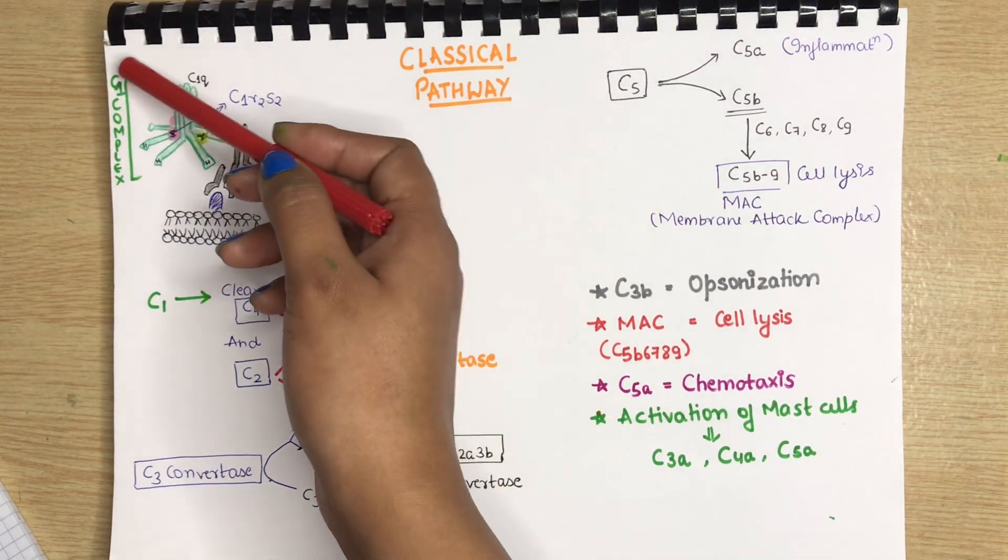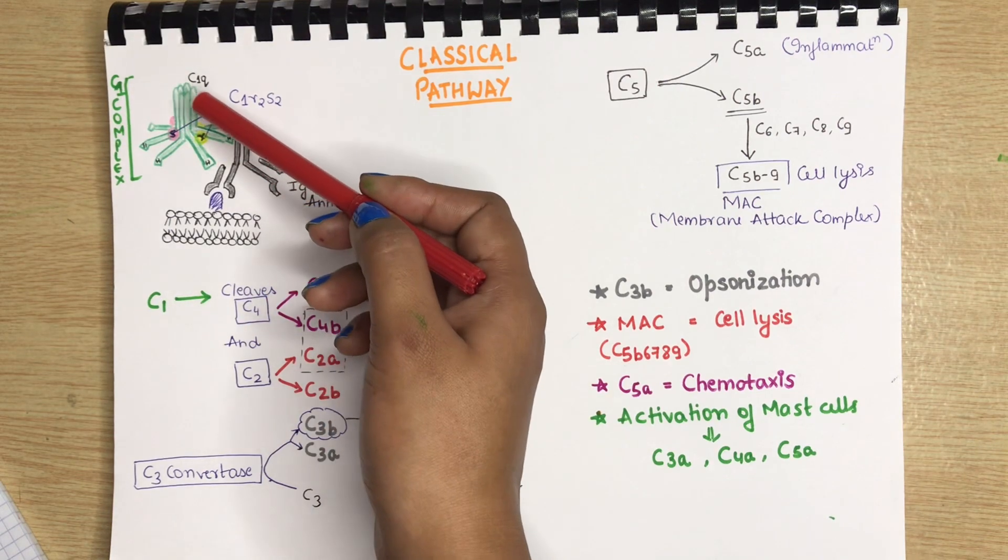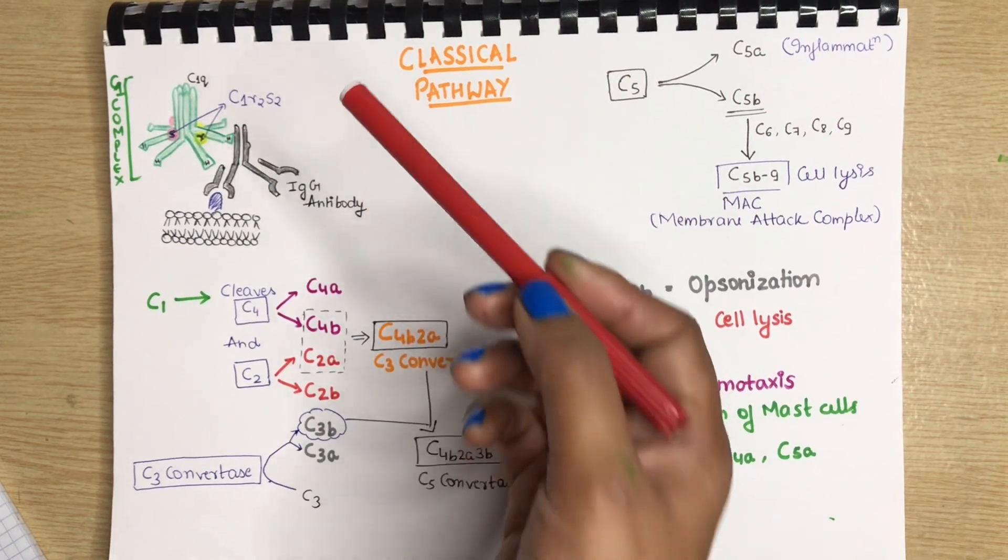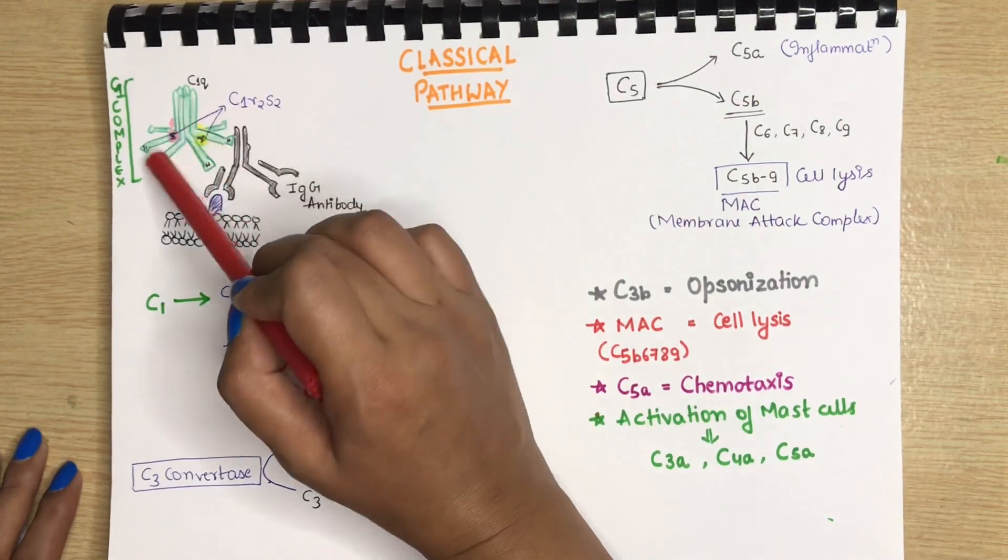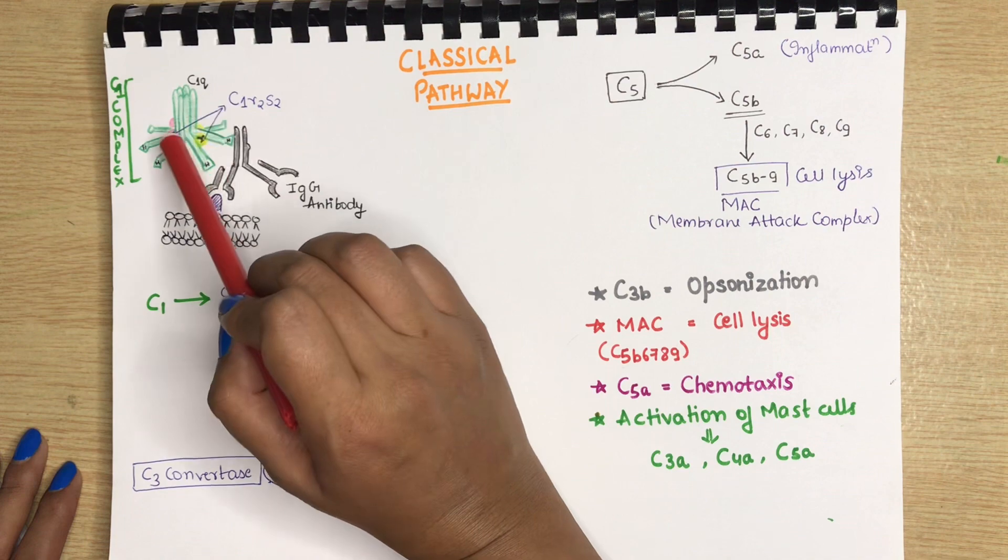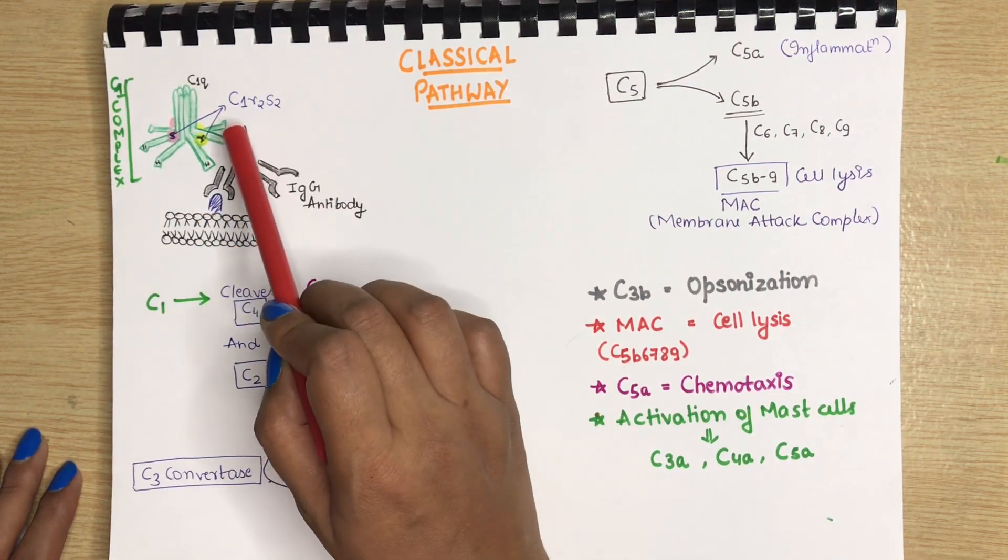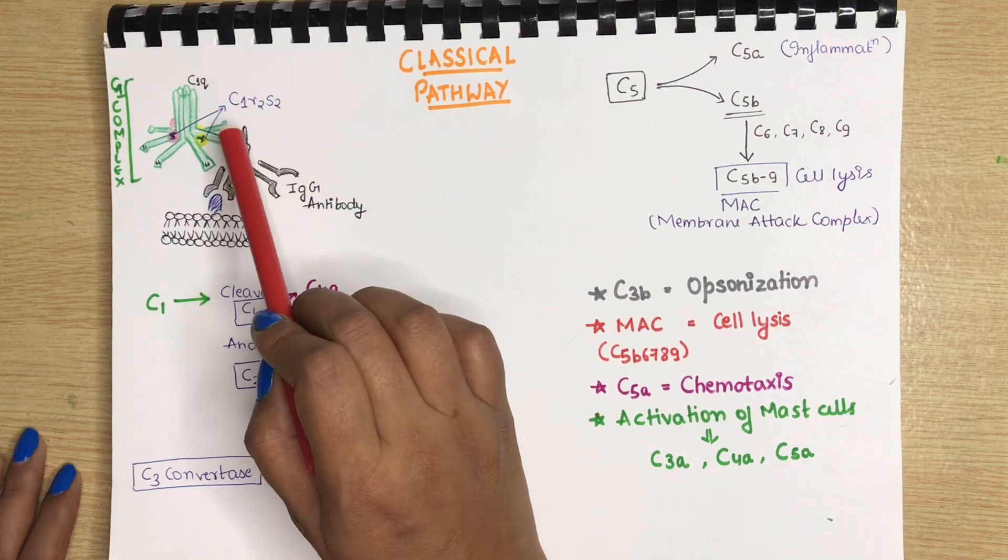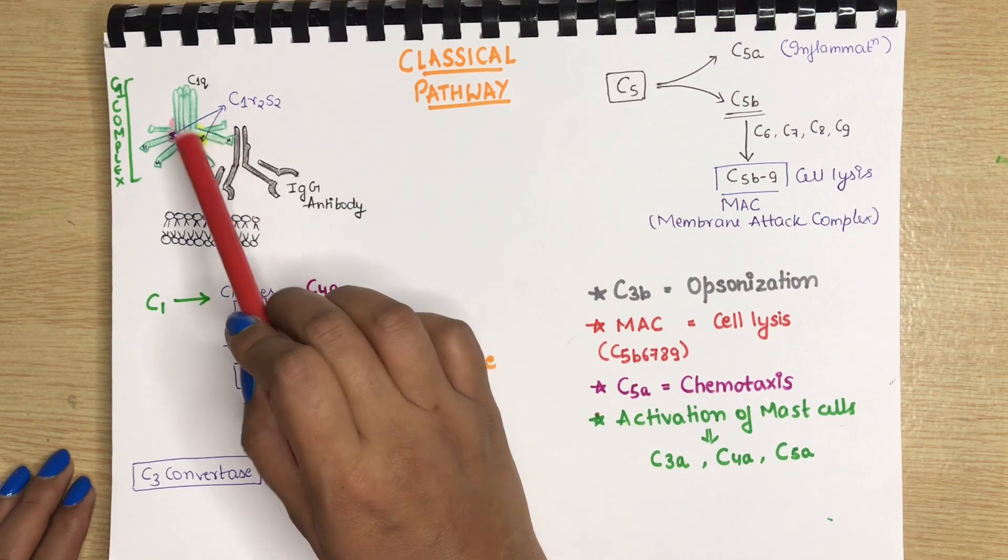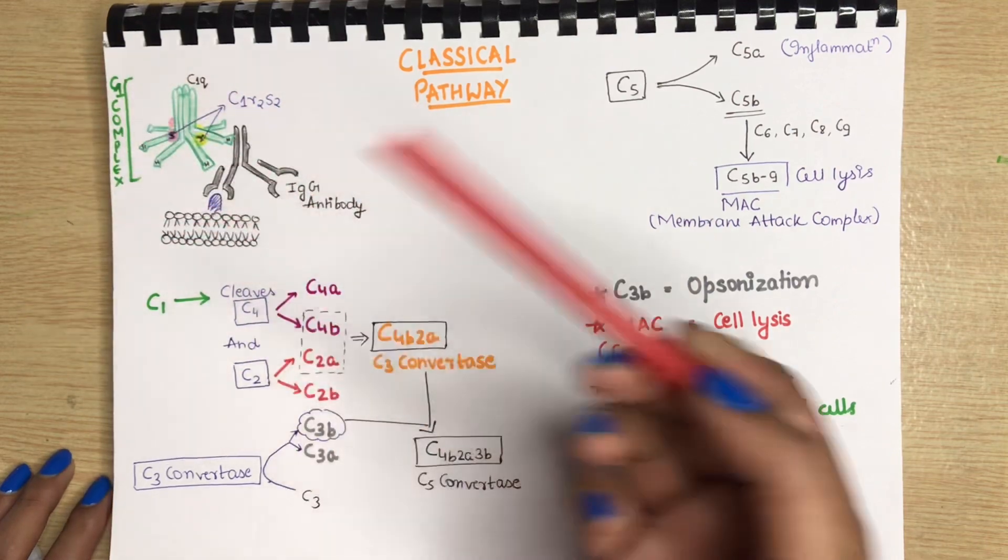What is C1 complex? C1 complex basically consists of C1Q, C1R and C1S. C1Q are 6 in number, C1R are 2 in number and C1S is 2 in number. So, this complex will attach to the C1Q part and this Q part will hence activate the R and S. So, we have our C1 complex activated now.